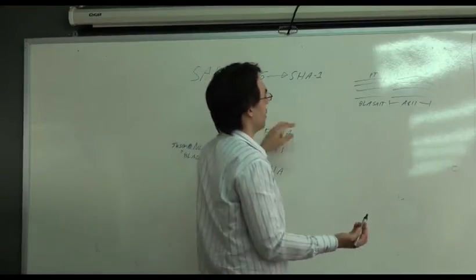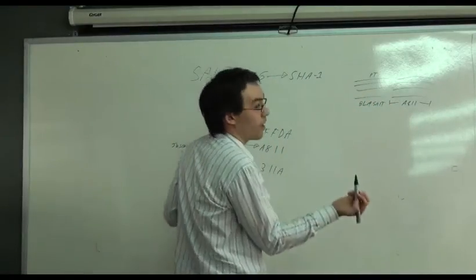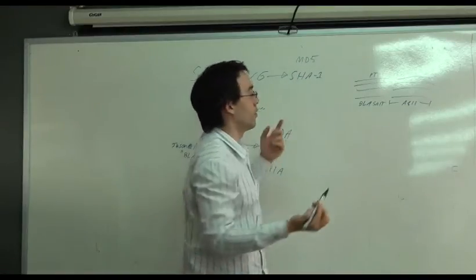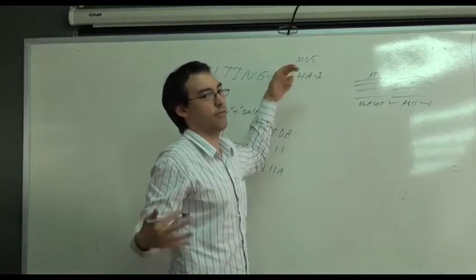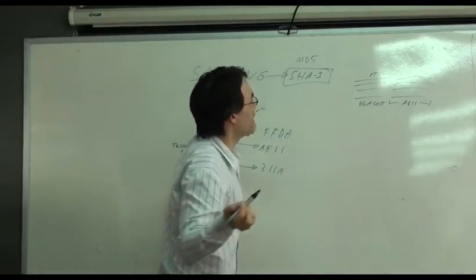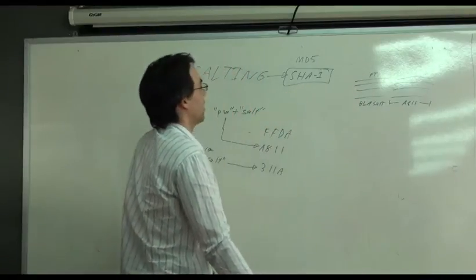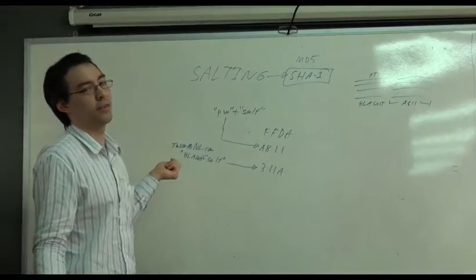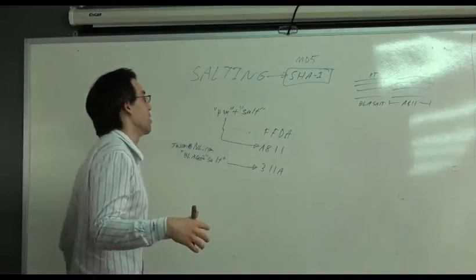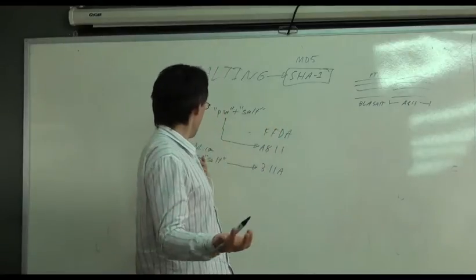So it's much harder for them to figure out what's going on, unless they know what this salt value is, right? Then it's not so hard. But it still helps defeat the problem of these pre-existing rainbow tables.